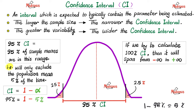A 95% confidence interval means 95% of sample means are within this range. The larger the sample size, the narrower the confidence interval — that's why we say there is statistical power in numbers. Conversely, the greater the variability between means, the wider the confidence interval, because you are less confident when the means are all over the place.